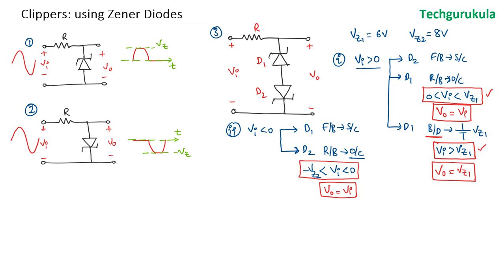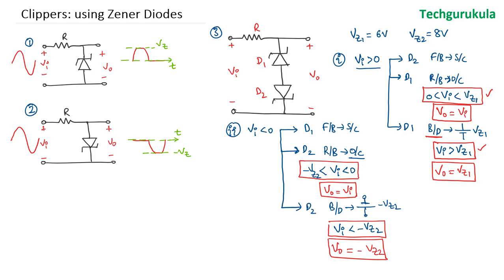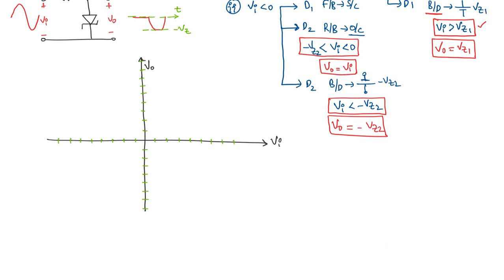But if the input voltage becomes less than minus VZ2, D2 enters the breakdown region where we model it as a voltage source, and V0 will be equal to minus VZ2 under this condition. To recap: VZ1 is 6 volts and VZ2 is 8 volts.